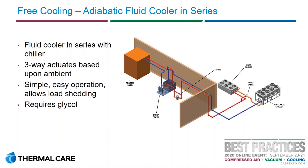We have that fluid cooler — which in this case could be a traditional dry one or the adiabatic style — and we put it in series with the air-cooled chiller. In the coldest months of the year, we can send the hot water returning from the process through this fluid cooler, or free cooler, before it goes to the chiller. This removes heat from the system before the chiller even sees it, allowing the chiller to either turn off completely or consume less energy — which is part of load shedding, which we'll cover shortly.